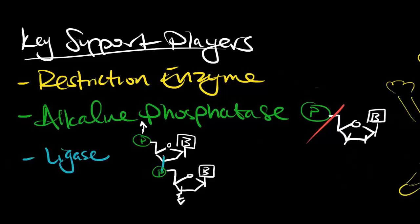Alkaline phosphatase is an enzyme that is used to take off free end phosphate groups, as shown in the picture. If phosphatase is added to the vector only, this prevents the vector from being able to close back on itself without the insert.